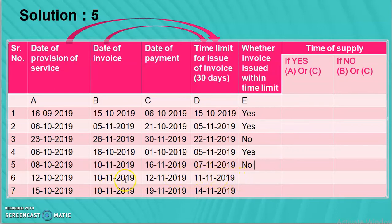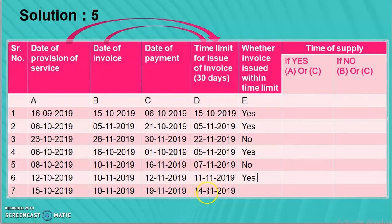For the 7th point: time limit is 14-11, and invoice is issued on 10-11 — that means within time limit, so yes. So students, the yes/no column is now complete. This comparison is highly important. If you understand this, the rest becomes easy.